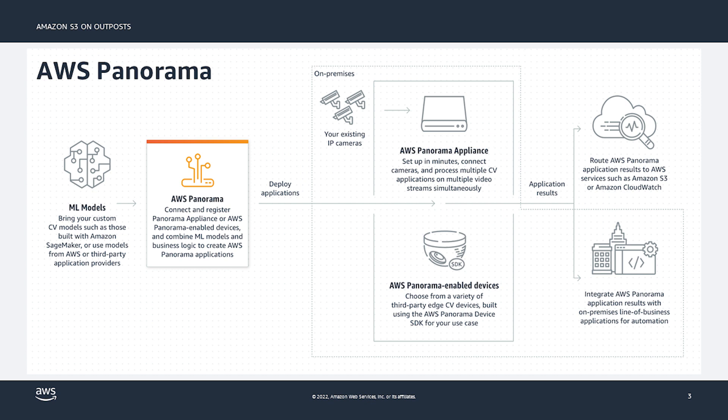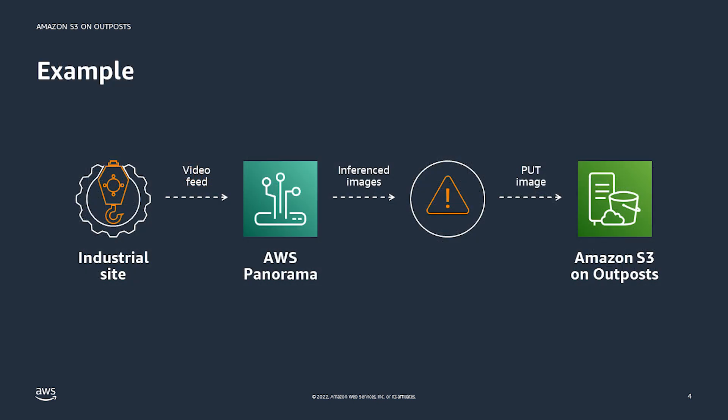Panorama works with your existing real-time streaming protocol network cameras. The appliance runs secure computer vision applications from either AWS partners or that you build yourself with the Panorama application SDK. We'll see how Panorama can read and write from the local S3 on Outpost bucket and run a self-contained computer vision application at the edge.